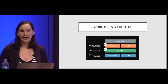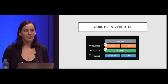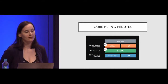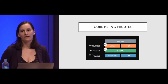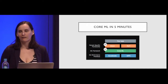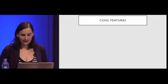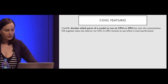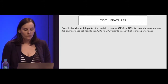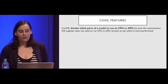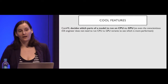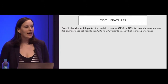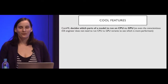There's a lot more to explore, and even in the subsequent betas over the last few weeks, new features are being added. One really cool feature: CoreML decides which part of a model to run on the CPU versus the GPU. Even the most conscientious iOS engineer doesn't need to run CPU versus GPU variants to see which is more performant.